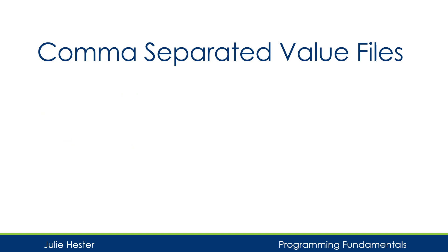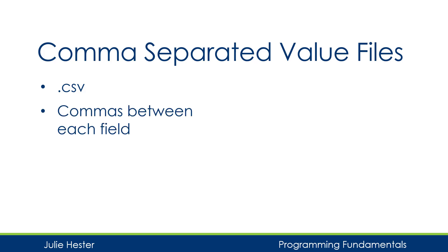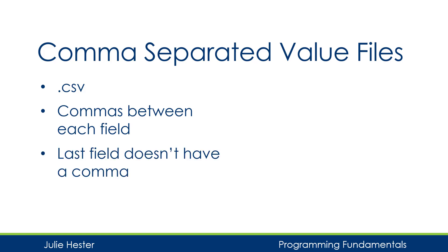Sometimes our data is written in what's called a comma-separated value file. These files can end with .csv or .txt. They're basically just text files, but we have a comma between each field in the file. The last field in each record doesn't have a comma — it just has an end-of-line, or return.